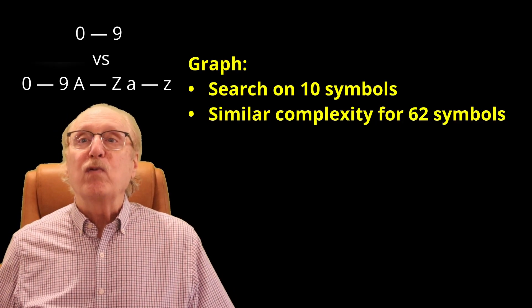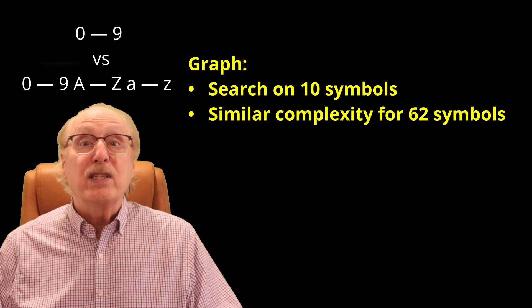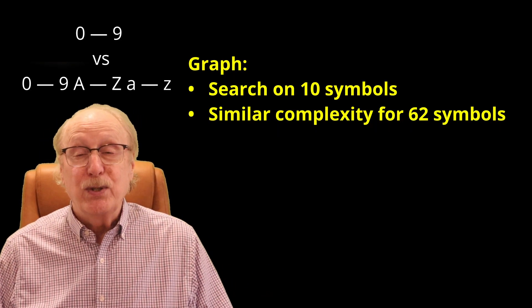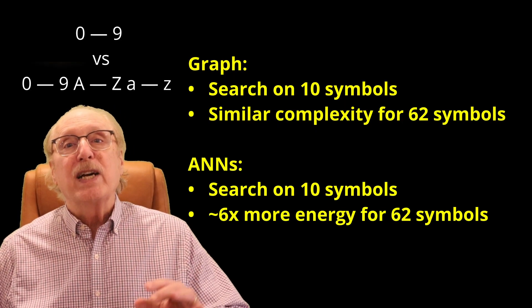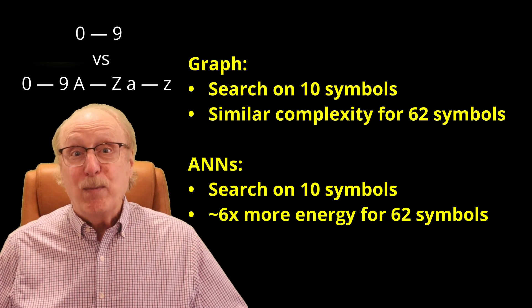So even in a simple case like recognizing characters, a graph which recognizes digits would run at essentially the same speed as one which recognizes both letters and numbers, or 62 symbols. In contrast, a neural network which recognizes more symbols requires proportionately more computational energy. So while machine learning burns through petaflops and gigawatts, your brain performs its searches in just a few hops across a graph, all on about 20 watts of energy. And an AI based on this architecture could too.